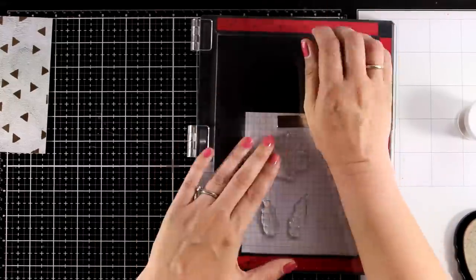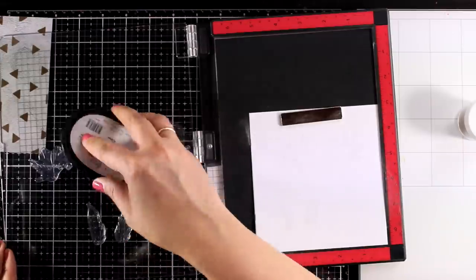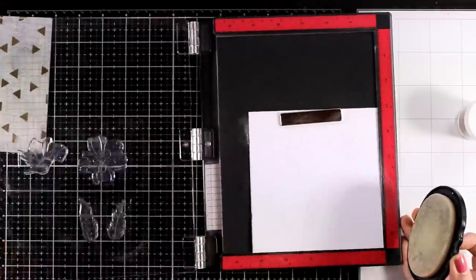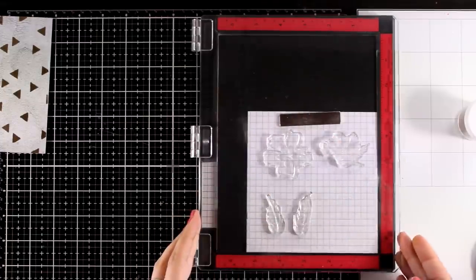I always like to ink up my stamps a couple of times - that's why I'm using a Misti - so that I know that I get a good impression, especially now that I cannot really tell where I have stamped.